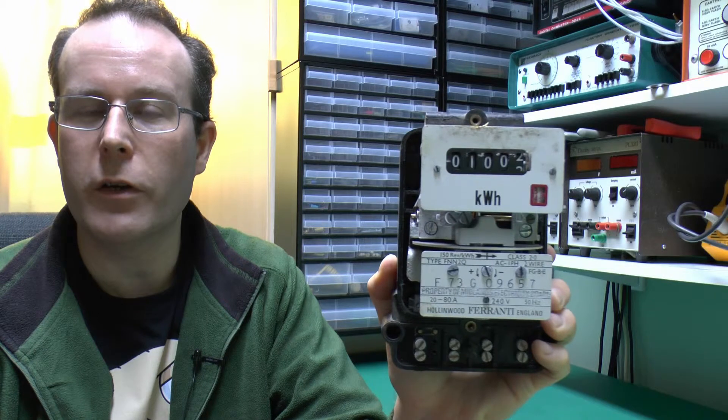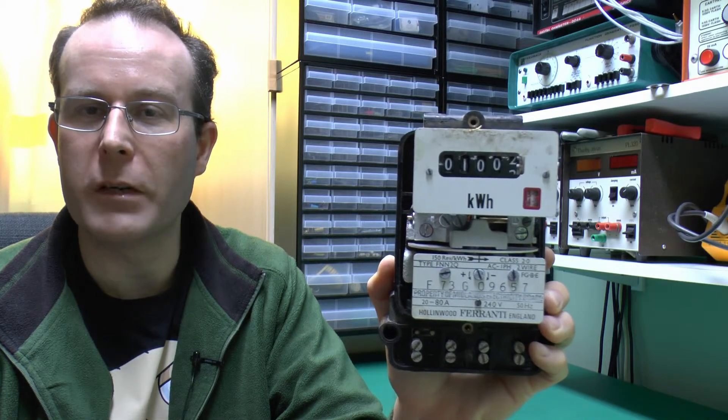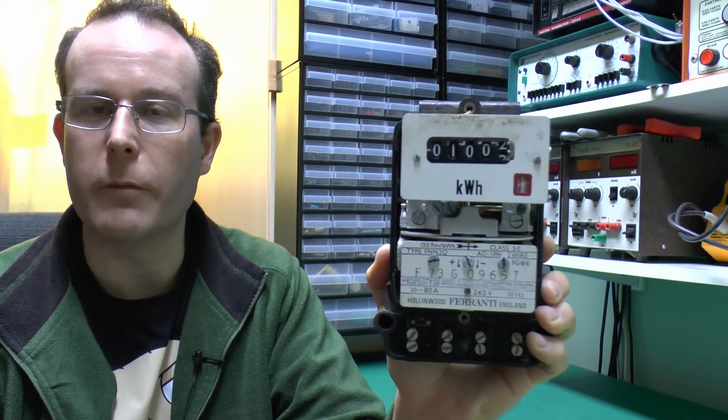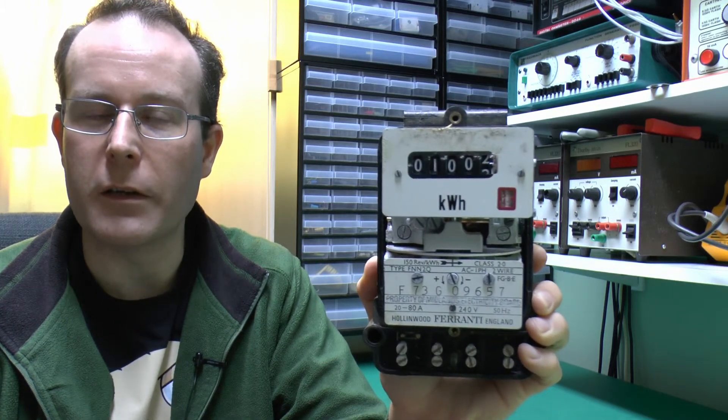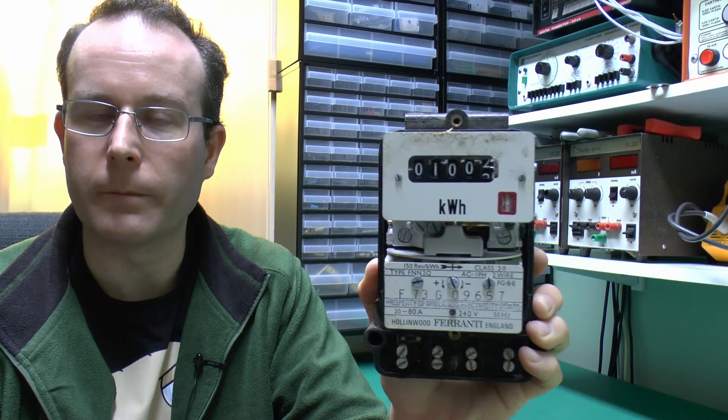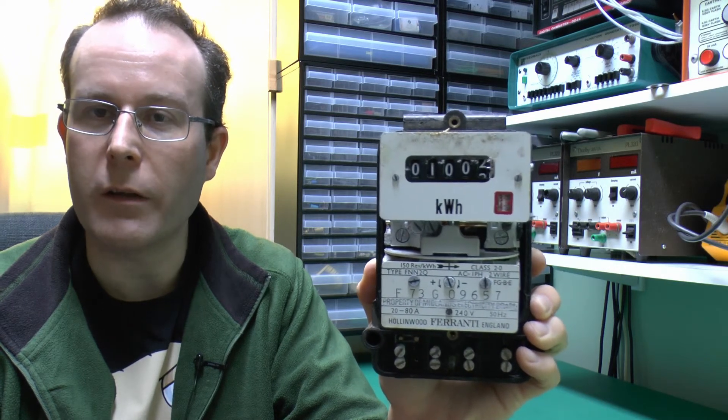So you have the FNN 2Q by Ferranti. Probably a good meter in its time, but this one has been severely abused and left out in the rain or something. So in reality, this is life-expired, and ultimately it's just a piece of junk. Until the next video, thanks for watching.